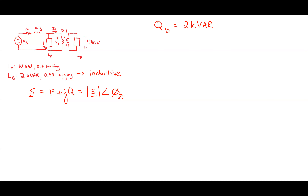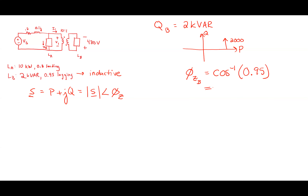Now I want to find the full triangle for Load B. I can get the angle first. The angle phi_ZB equals the inverse cosine of 0.9, which works out to 18.1949 degrees.